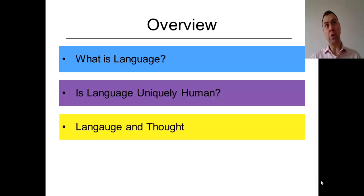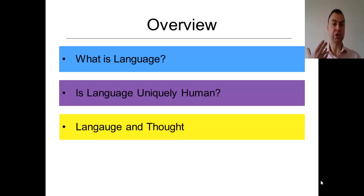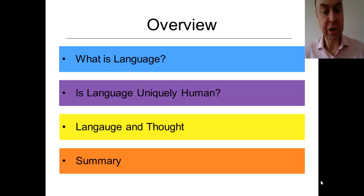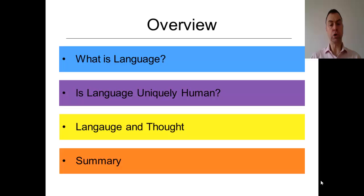We'll also look at how language shapes our thoughts. Without being fully aware of it, we actually do think in words. When I'm thinking through a problem, I'll often hear an internal dialogue going on in my head — my own internal voice using verbal language to go through the problem and think out potential solutions. Then we'll end with a summary of what we covered today and what you should take away from this brief look at the cognitive process of language.